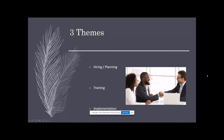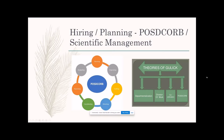The three themes are hiring and planning, training, and implementation. For hiring and planning, I want to use Gulick's POSDCORB theory. This theory has seven key functions: planning, organizing, staffing, directing, coordinating, reporting, and budgeting. I'm going to talk about planning and staffing. Planning refers to the establishment of the work and its processes as incorporated to implement the work within the organization.